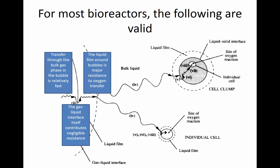Step three involves the liquid film that surrounds gas bubbles. This liquid film is a lot like the liquid film that surrounds immobilized catalyst beads — it is poorly mixed and contributes a lot of mass transfer resistance. Oxygen traversing this film is one of the major resistances to oxygen transfer from gas to cells.